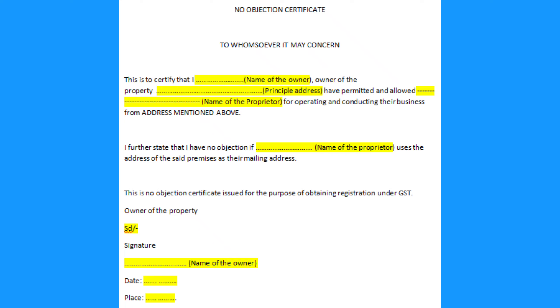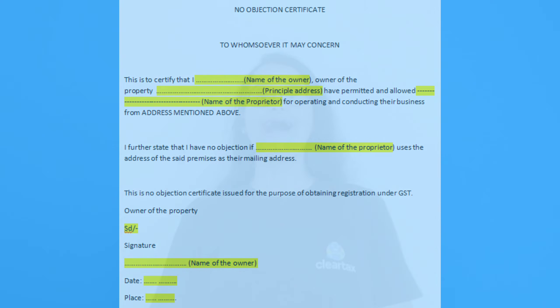This is how the ideal consent letter or NOC looks. It is titled 'No Objection Certificate' and addressed 'To Whomsoever It May Concern.' It reads: 'This is to certify that I, [name of owner], owner of the property at [principal address], have permitted and allow [name of proprietor] for operating and conducting their business from the address mentioned above. I further state that I have no objection if [name of proprietor] uses the address of the said premises as their mailing address. This NOC is issued for the purpose of obtaining registration under GST.' The owner must sign the document, adding the date and place. A downloadable Word doc link for the consent letter format is available in the video description below.